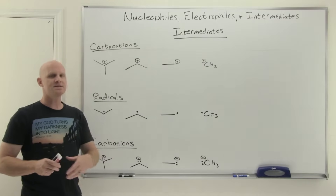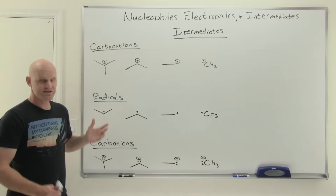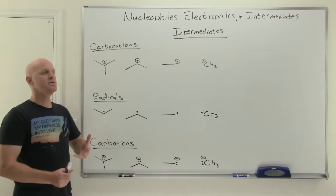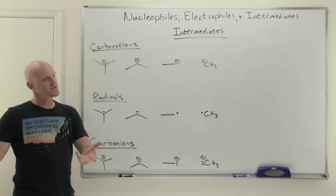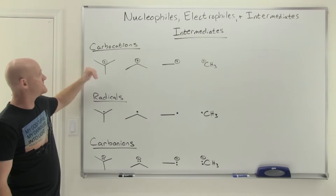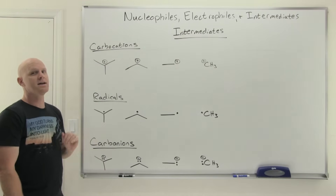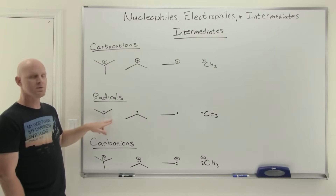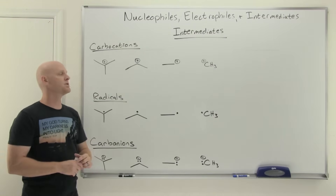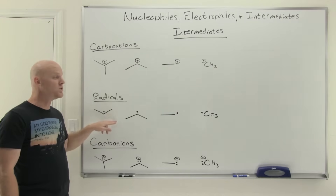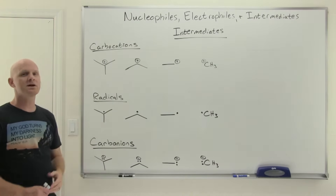We'll conclude this lesson by looking at three types of carbon intermediates. In organic chemistry, carbon can carry a positive formal charge (carbocation), a negative formal charge (carbanion), or a single unpaired electron, which we call a radical or free radical. These are the three standard types of carbon intermediates, and we want to understand stability trends for each.